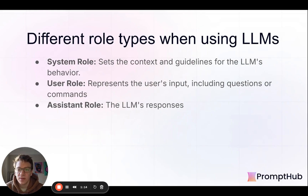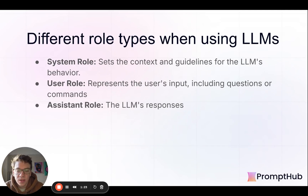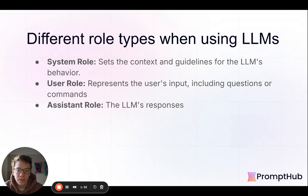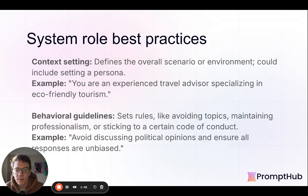So at the top there, when you're making an API request to any LLM provider model, there are generally three roles: the system role, the user role, and the assistant role. The system role harks back to chatbots where you can define the overall system the user is going to interact with. The user role represents the user's input — basically the prompt to get the output. And the assistant role is the LLM's response.